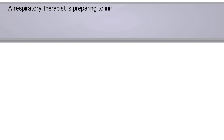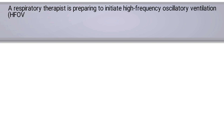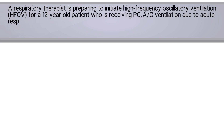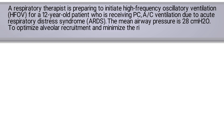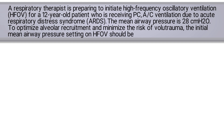A respiratory therapist is preparing to initiate high frequency oscillatory ventilation for a 12-year-old patient who is receiving pressure control assist-control ventilation due to ARDS. The mean airway pressure is 28 centimeters of water pressure. To optimize alveolar recruitment and minimize the risk of volume trauma, the initial mean airway pressure setting on high frequency oscillatory ventilation should be set at which of the following?